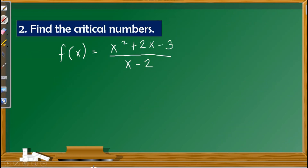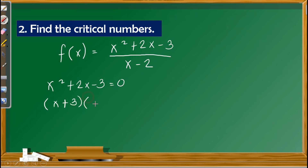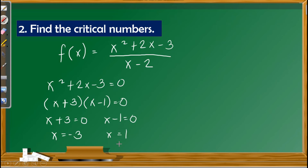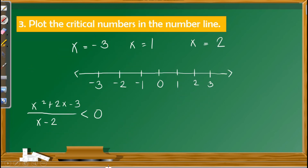From the standard form, the function is f of x equals x squared plus 2x minus 3 over x minus 2. For the second step, we find the critical numbers by equating the numerator to 0 and finding its factors, then equating each factor to 0. This gives critical numbers from the numerator. For the denominator, x minus 2 equals 0, so x equals 2. In this problem we have three critical numbers: negative 3, positive 1, and positive 2. For the third step, we plot these on the number line.